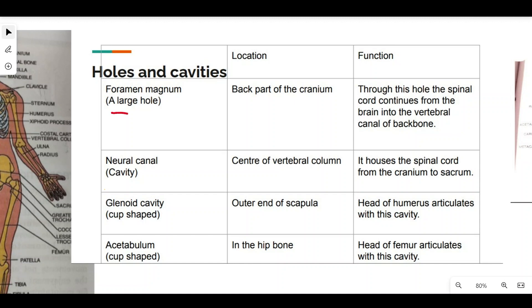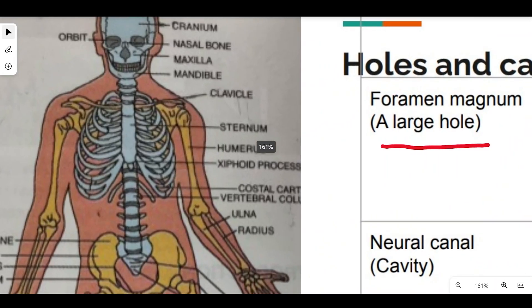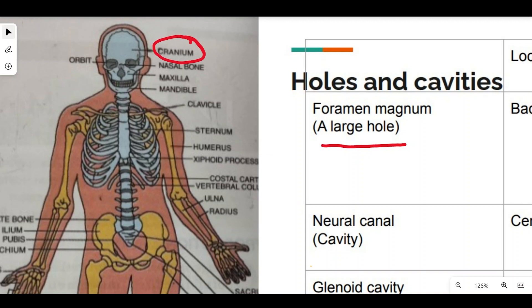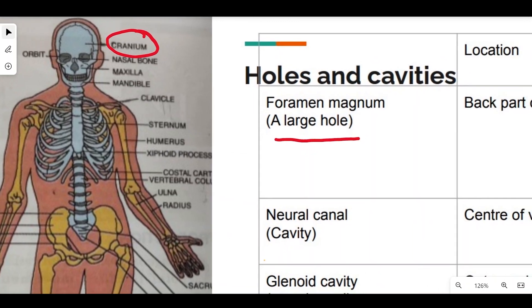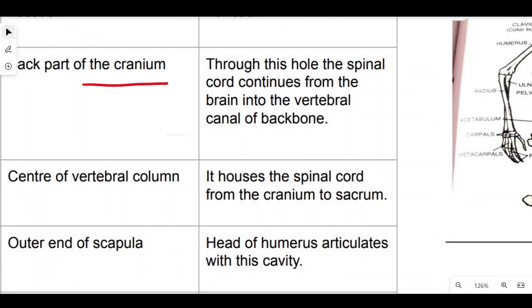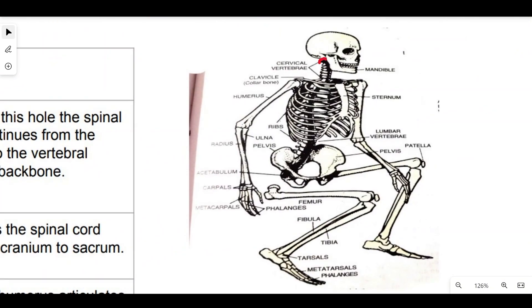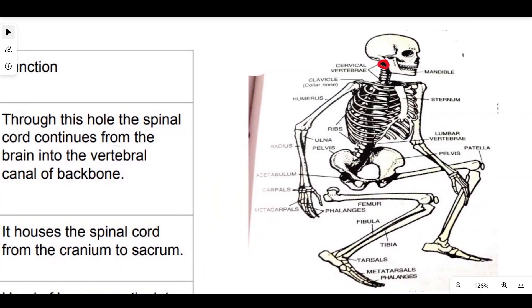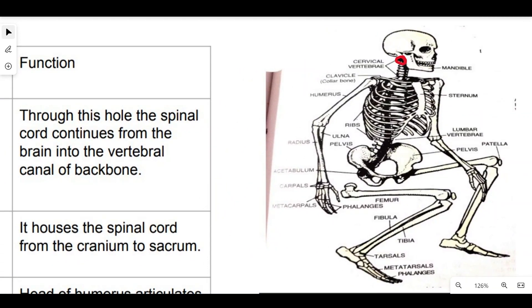The foramen magnum is a large hole located at the back base of the cranium (the brain box part of the skull). Its importance is that the spinal cord passes through it, continuing from the brain into the vertebral canal of the backbone.